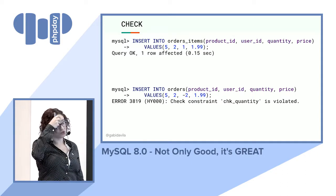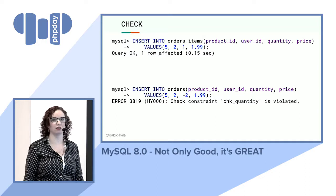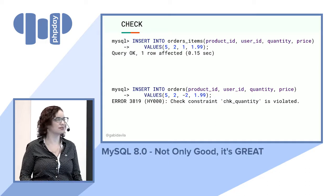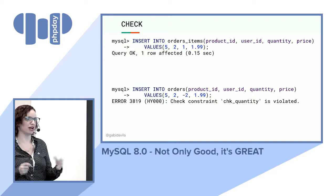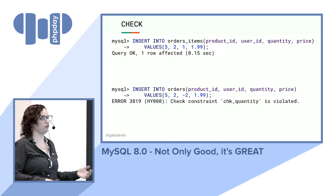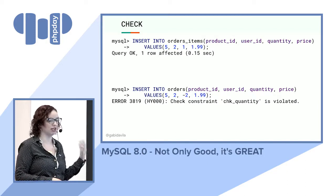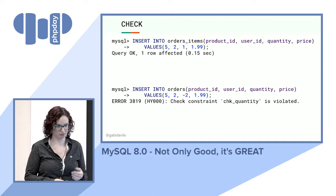This means no more data inconsistency in your database. It's really useful when you have multiple applications connecting to the same database — though I recommend having a single API instead. But if you have a legacy application and want to upgrade, this adds real value.